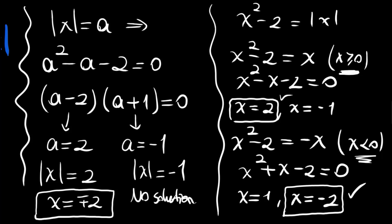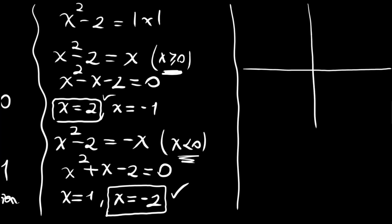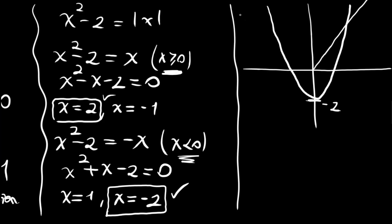Let's finish by showing the graph of these two functions. The graph of x squared minus 2 is a parabola with vertex at minus 2, and the absolute value of x is a V-shape. We can see the intersection points at x equals plus or minus 2.